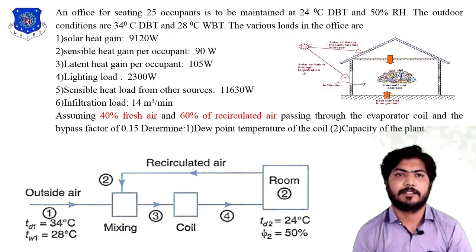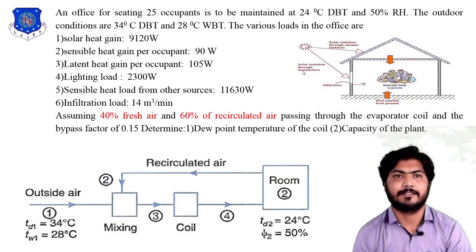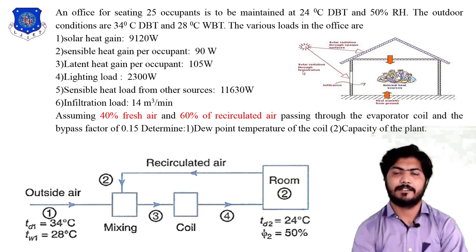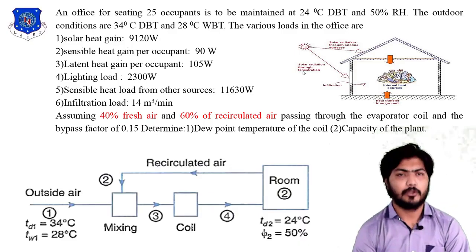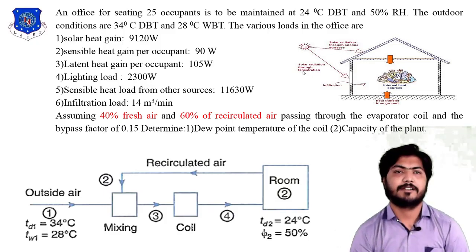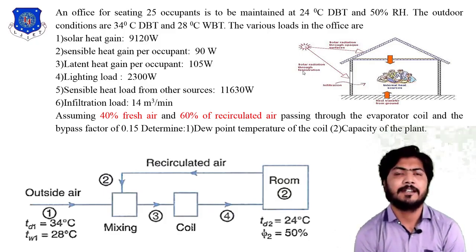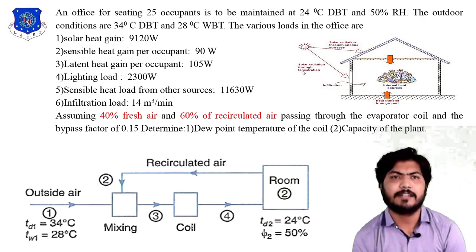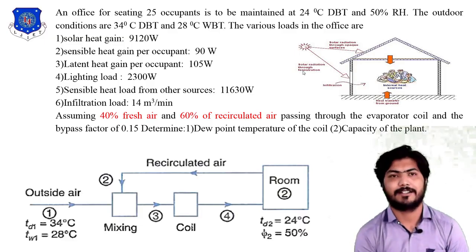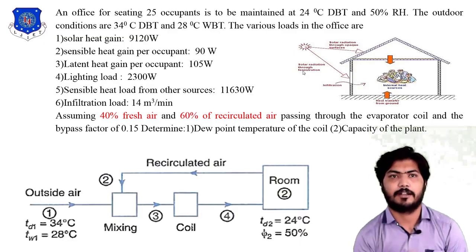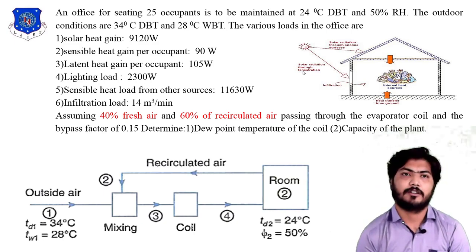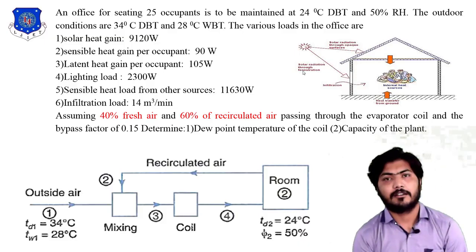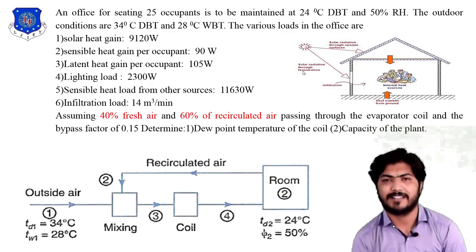First, the outside conditions and inside conditions to be maintained are given. We draw these on the psychrometric chart: the outside condition is point 1 and the required room condition is point 2. To locate point 1, the dry bulb temperature is a vertical line on the psychrometric chart. The inclined wet bulb line and the vertical dry bulb line are crossed to give the intersection point, which is the outside air condition point 1.